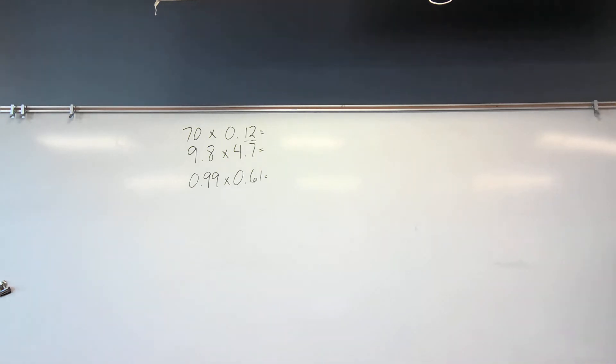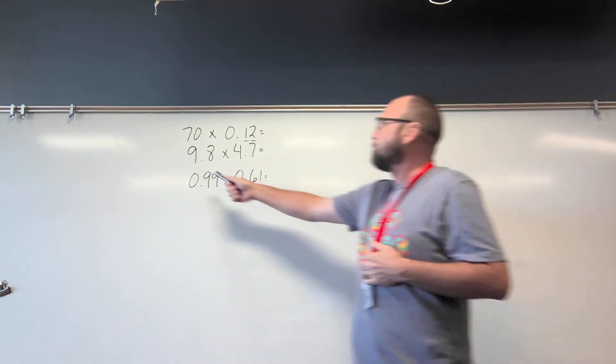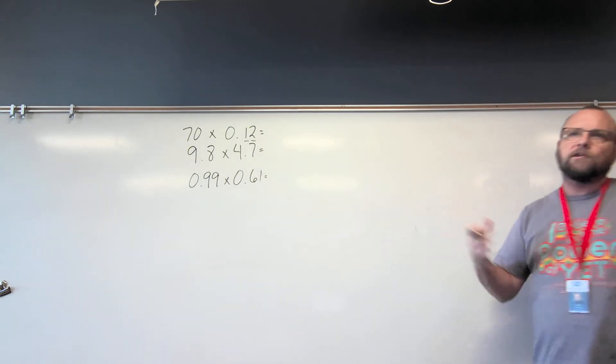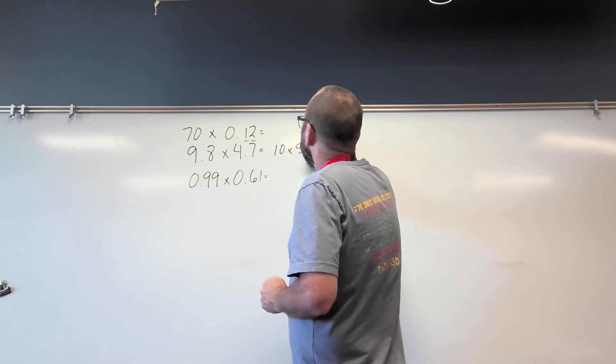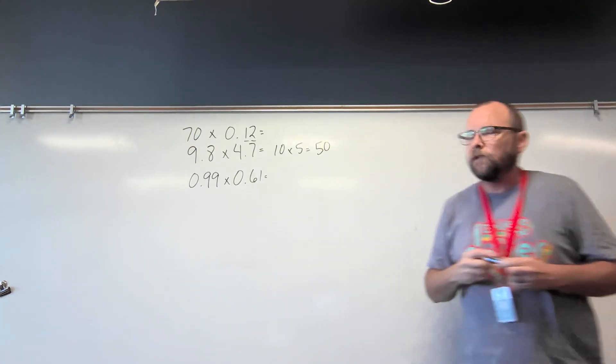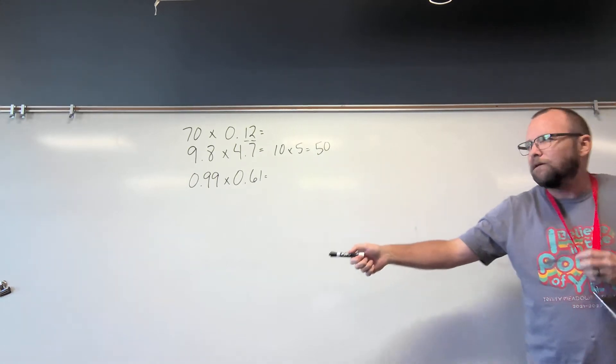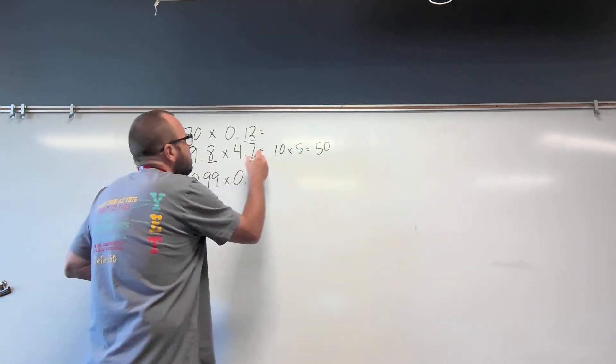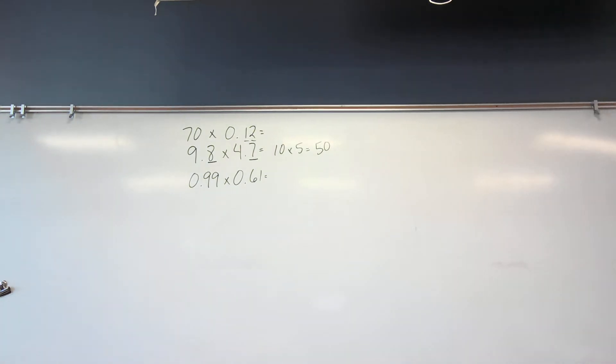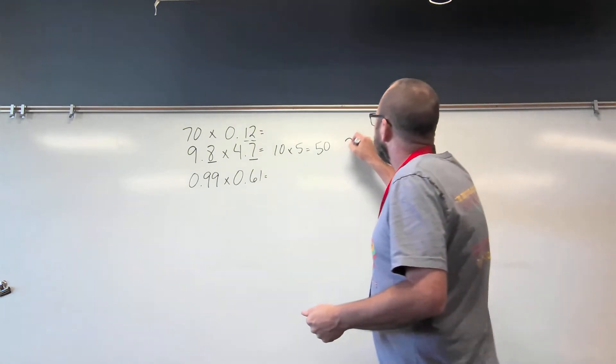All right. Now we have our next problem. Nine and eight tenths times four and seven tenths. I want to estimate first. Allie, we have nine and eight tenths and four and seven tenths. Can you help me estimate what should I maybe do? Okay. Okay, so my estimate should be around 50. Probably less than 50, since I changed both these factors. I rounded them up. Allie, how many numbers are going to be behind my decimal point in my product? Two. Because there are two numbers behind my decimal point in my problem, that means there has to be two decimal or two numbers behind my decimal point in my answer. So there needs to be two.